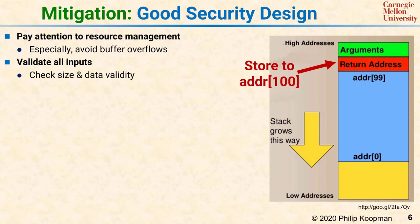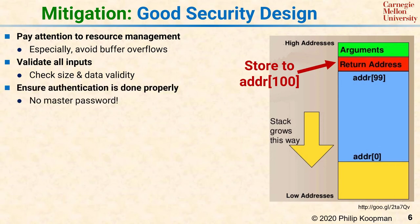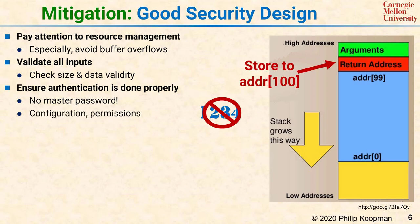Attackers can compromise systems by feeding them null pointers, not-a-number floating point values, or zero-length strings. Always ensure authentication is done properly — there should not be a master password that is the same across multiple systems. Make it difficult for users to use weak passwords such as 1234. Make sure the system as shipped has strong security with its default configuration and permissions, and avoid shipping with a standard default login password, since users often will not change it.